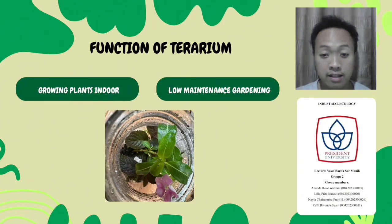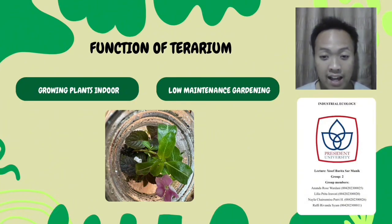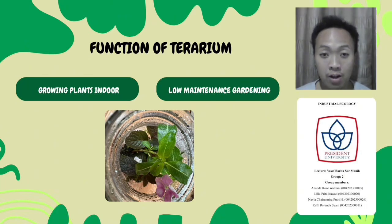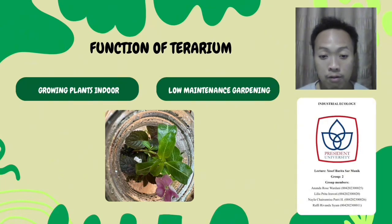Another practical benefit is that terrariums allow people to grow plants indoors, even in small or sun-limited spaces. They are ideal for apartments or offices where outdoor gardening is not possible. With the right choice of plants like succulents, mosses, or ferns, anyone can enjoy greenery without needing a big backyard. Lastly, terrariums are known for being low maintenance, especially closed terrariums. Water is recycled through condensation, reducing the need for frequent watering. This makes them perfect for busy individuals or beginners who want to enjoy the benefits of plant care without the hassle of traditional gardening. That's it for the functions of terrariums.